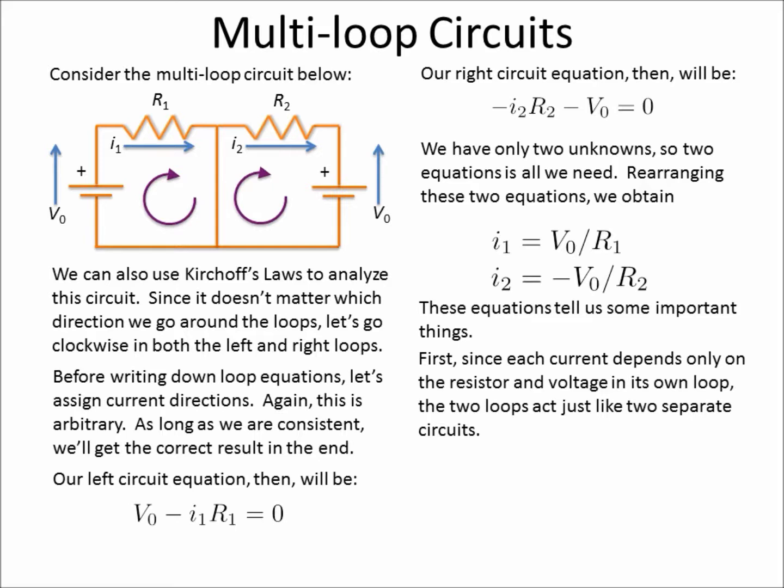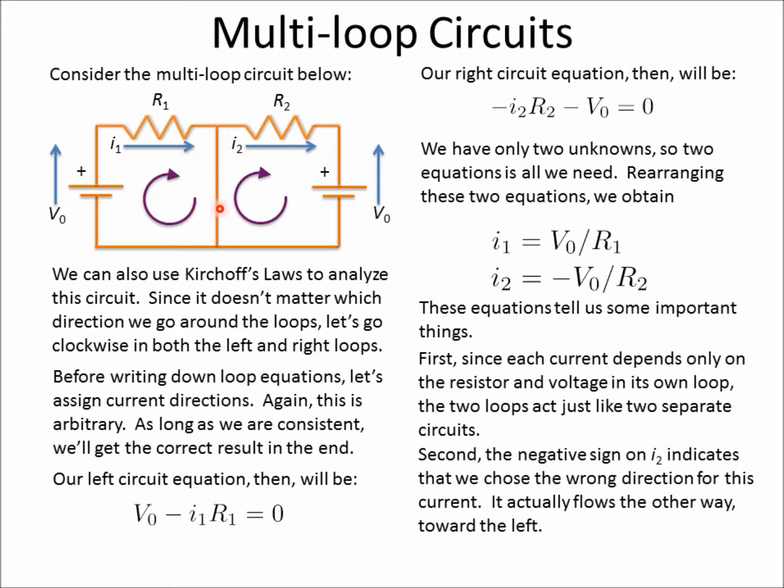So we can see that I2 is only proportional to V-naught, the one that we got over here, and R2. I1 is only proportional to the first battery times R1. So it's interesting. This acts as two separate circuits, even though they do share common wire.